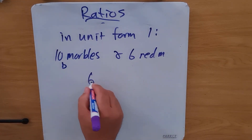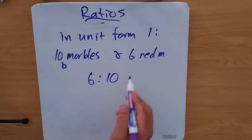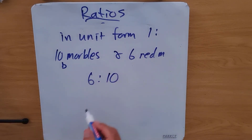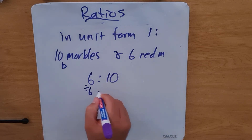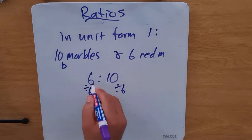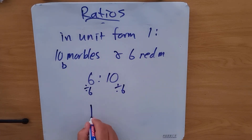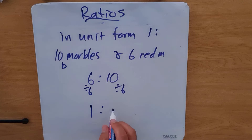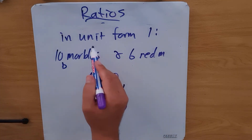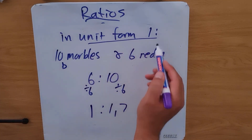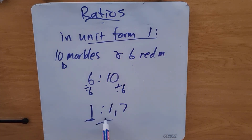You can also do it the other way around and say six to ten — six red marbles to ten blue marbles — and again divide by six, so that we have the one. This works out to 1.7. So you can see we can do it either way, but at the end of the day our unit form must be a ratio of one to something else.